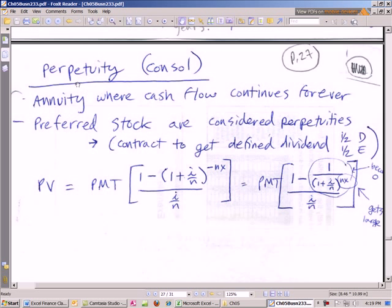We got to talk about perpetuity or consol. This is Chapter 5, we're talking about cash flows, multiple cash flows. We'll come back to this little model again in Chapter 7 for stocks. But what is a perpetuity? Perpetuity means just keeps on going.